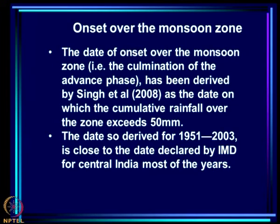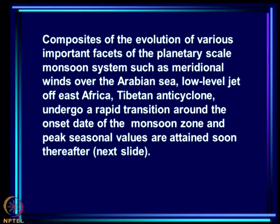There has been an interesting study by Nithyanand Singh and others on the onset of the monsoon over the monsoon zone. The date of onset over the monsoon zone has been derived as the date on which the cumulative rainfall over the zone exceeds 50 millimeters. If one talks of onset over the monsoon zone as a whole, this means the culmination of the advance phase of the monsoon - the culmination of the transition from spring to summer monsoon.